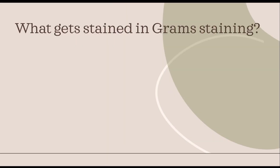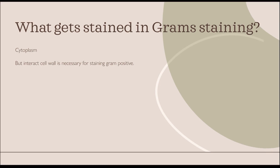The first question is: what gets stained in gram staining? Most students answer that it's the cell wall, but the correct answer is that it's the cytoplasm. Do remember that an intact cell wall is necessary for staining or retaining a gram positive result.